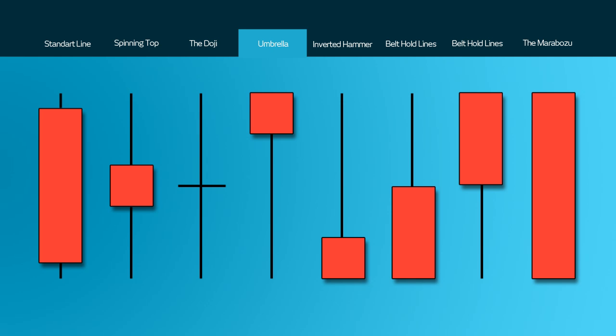The umbrella, or the hammer, or the hanging man depending on your take, can often be a bullish reversal pattern that forms after a decline. In addition to a potential trend reversal these can mark bottoms or support levels. After a decline, hammers signal a bullish revival and the low of the long lower shadow implies that the sellers drove prices lower during the session. The strong finish indicates that the buyers would have regained their footing to end on a strong note. Confirmation can be required in order to decide what direction to take following an actual hammer, umbrella or hanging man.